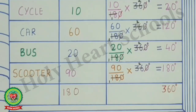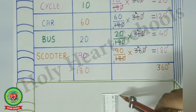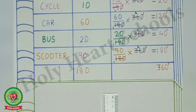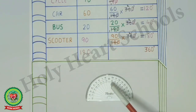Students, remember this: the sum of central angles should be equal to 360 degrees. To draw the pie graph, first open the compass to 5 cm, and with the help of a protractor we will draw the angles. Note that the protractor shows angles in two directions, but we will take only the downward angle to draw the angles in a pie graph.